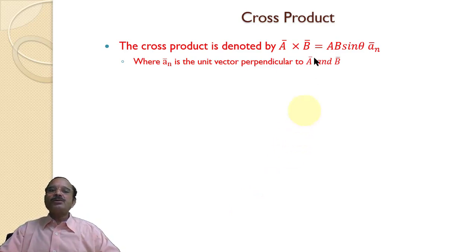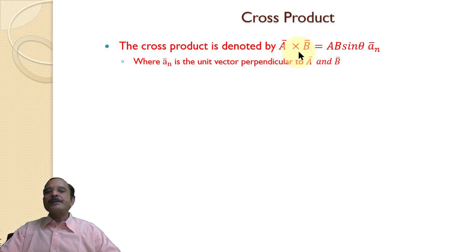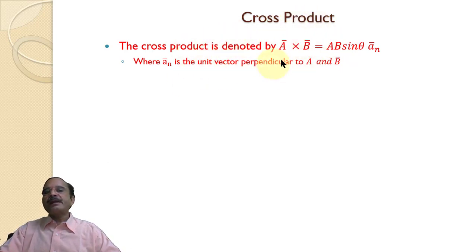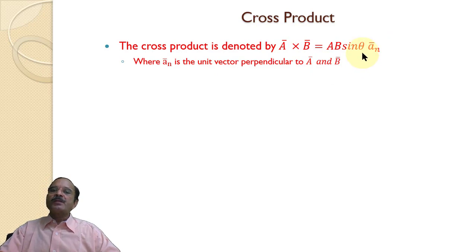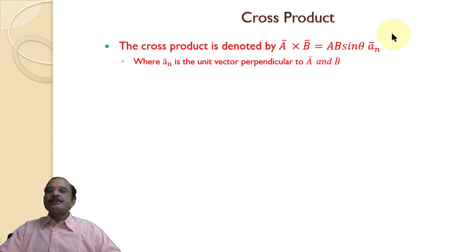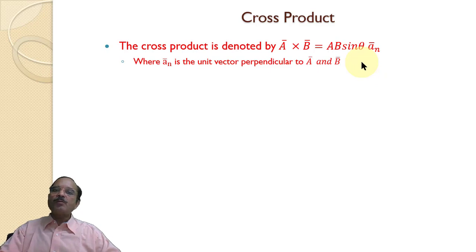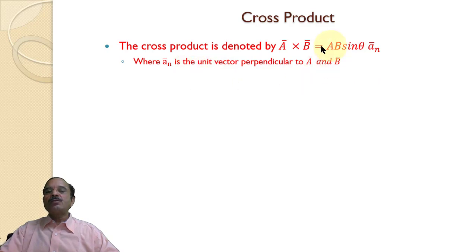In vector analysis, we also use many times the cross product. It is represented as a × b. The cross product between vector a and vector b is given as ab·sin θ·ân, where a is the magnitude of vector a, b is the magnitude of vector b, θ is the angle between vectors a and b. The cross product is a vector quantity. The direction of the resultant is always normal to both vectors, and ân represents the perpendicular direction to vectors a and b.